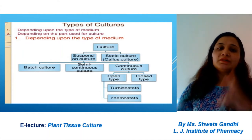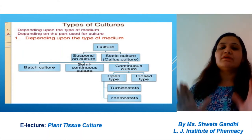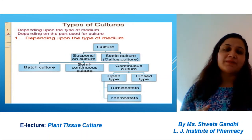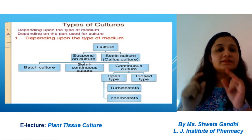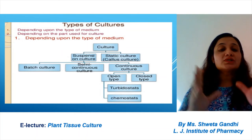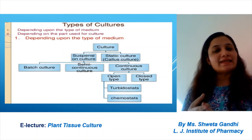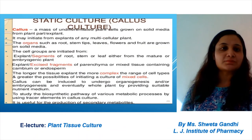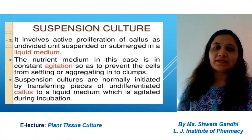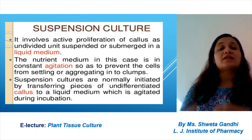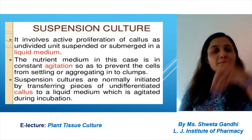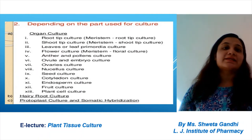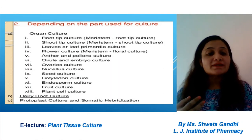Types of culture: there are two types based on the medium — suspension culture and callus culture. Suspension culture can be batch culture, semi-continuous, or continuous (open or closed). Callus means mass of cells; suspension means placing that mass into a liquid medium. In suspension culture, active proliferation of callus is submerged in the liquid medium. Depending on the part used, there are different types: hairy root culture, protoplast culture, and somatic hybridization. Organ cultures include root, shoot, flower, fruit, and plant cell culture — root tip culture, shoot tip culture, leaf culture, flower culture, anther culture, and hairy root culture.